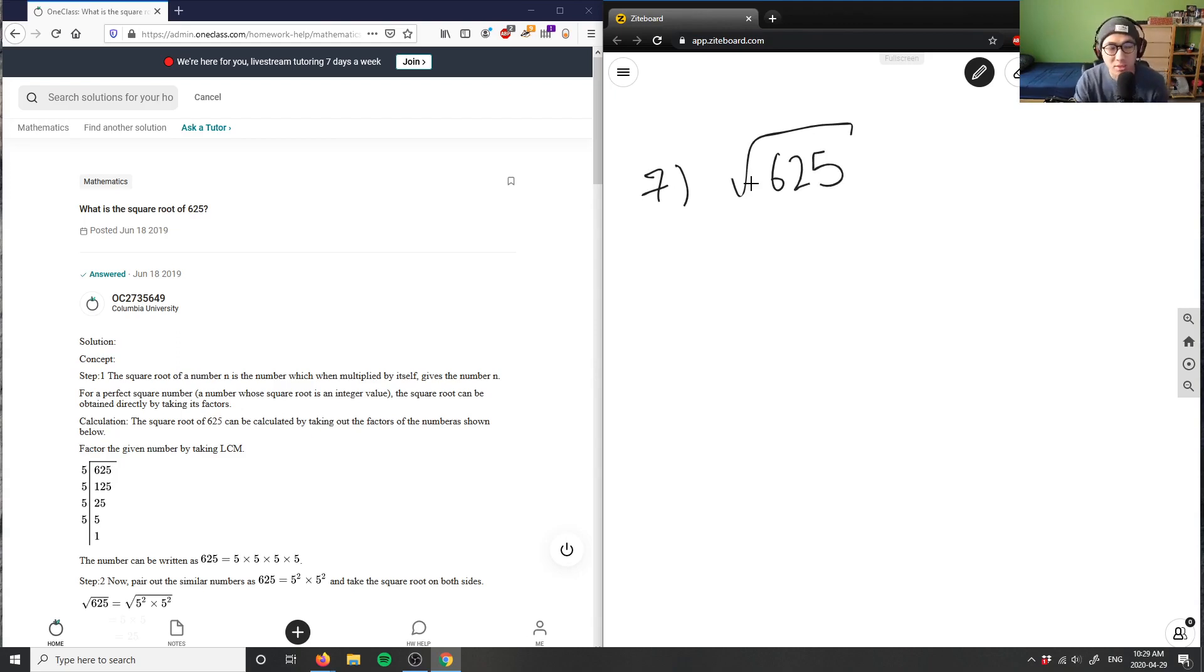I have 625. The first factor I would take out is 5. As you can see, all numbers that end in 5 and 0 are factorable by 5. So if I take a 5 out, I get 625 divided by 5, which is 125.